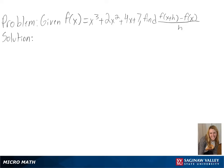Our problem is, given f of x equals x cubed plus 2x squared plus 4x plus 7, find f of x plus h minus f of x over h.